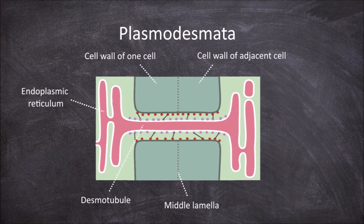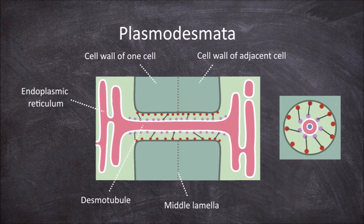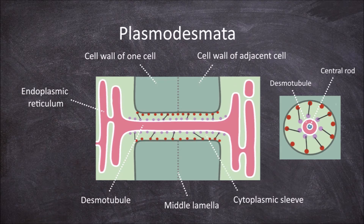If we looked at a cross section through this plasmodesma, you can see that within the desmotubule is a central rod. The gap between the desmotubule and the plasma membrane is called the cytoplasmic sleeve or cytoplasmic annulus.